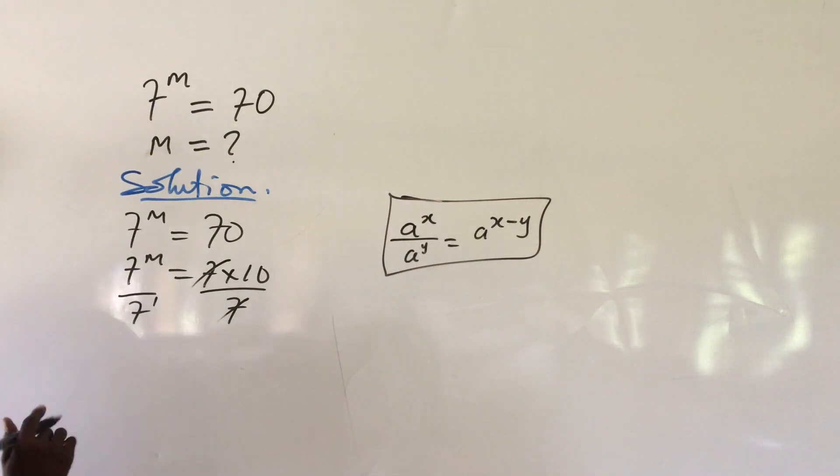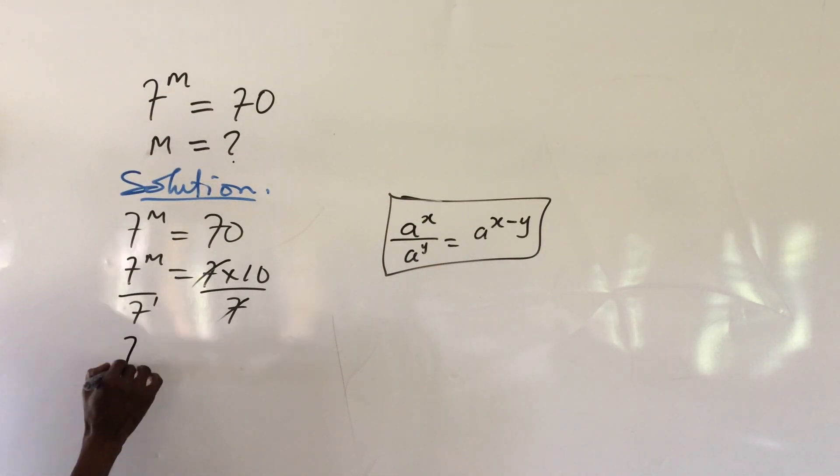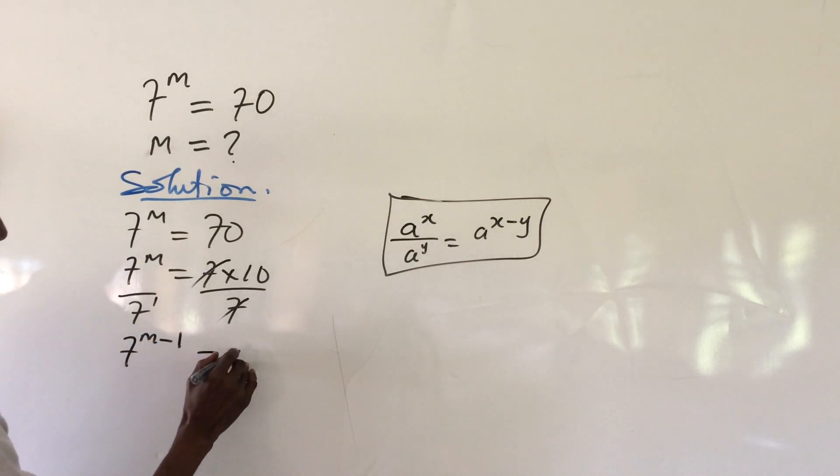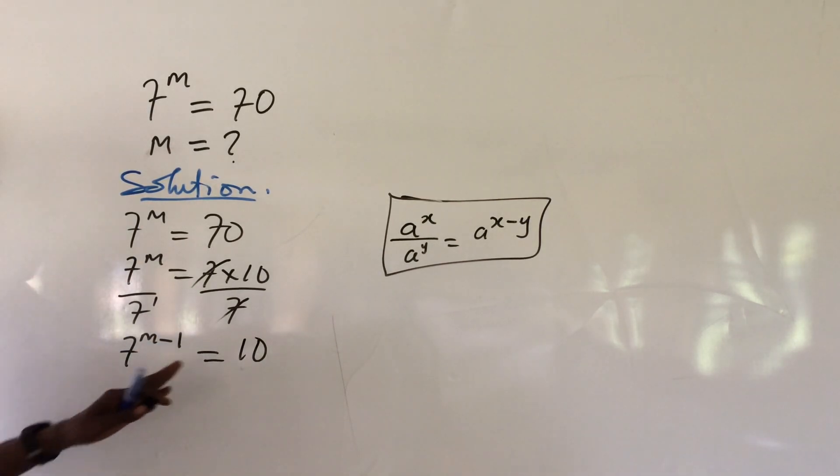So if we stick to this, we have the left-hand side to be 7 to the power of m minus 1 equal to 10. We're left with 10 on this other side of the equation.